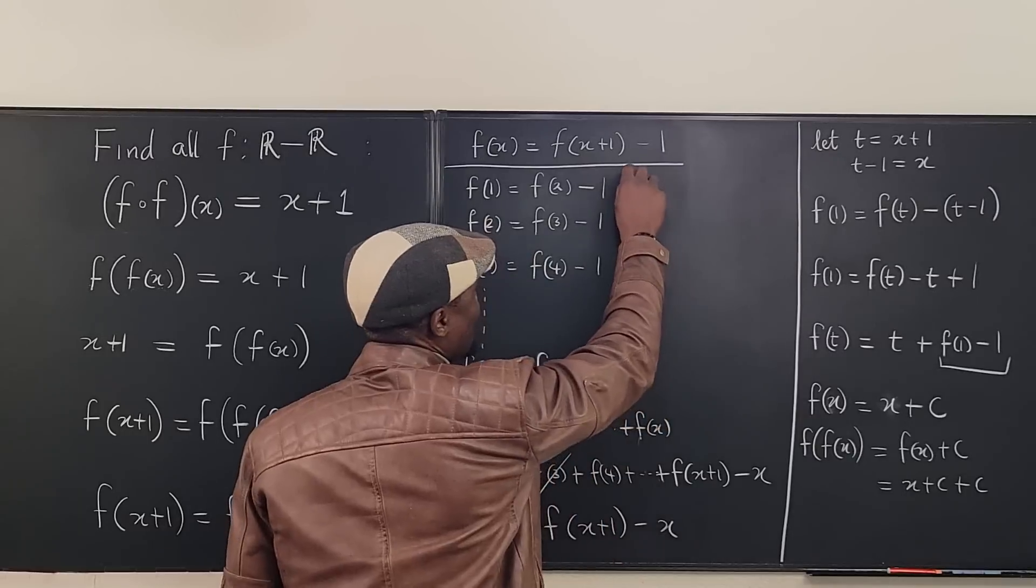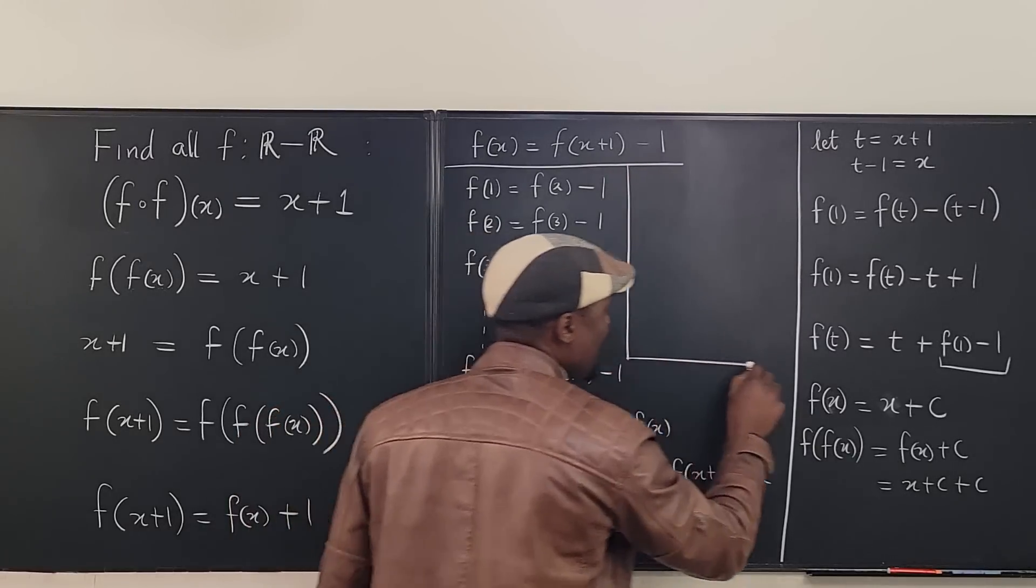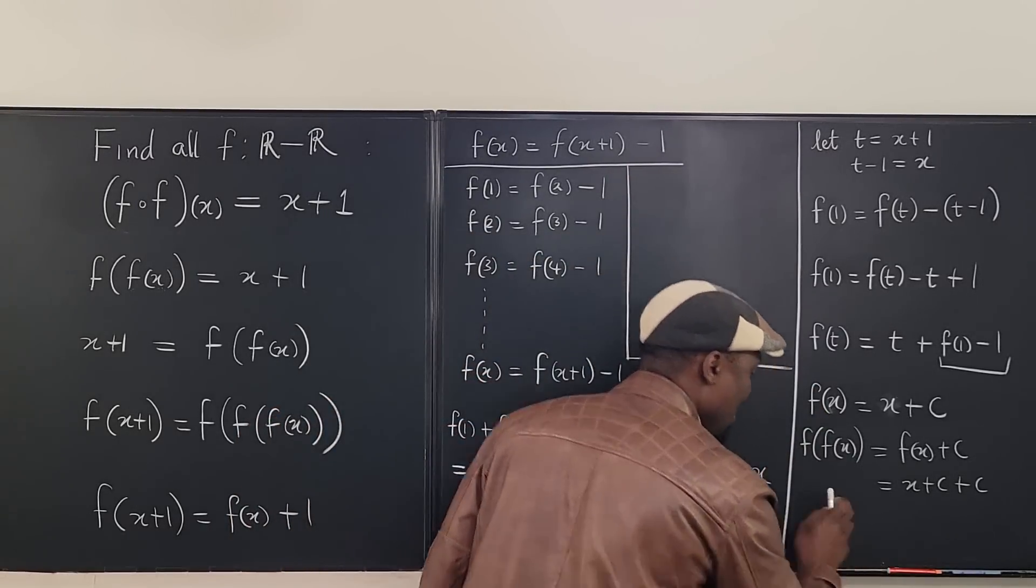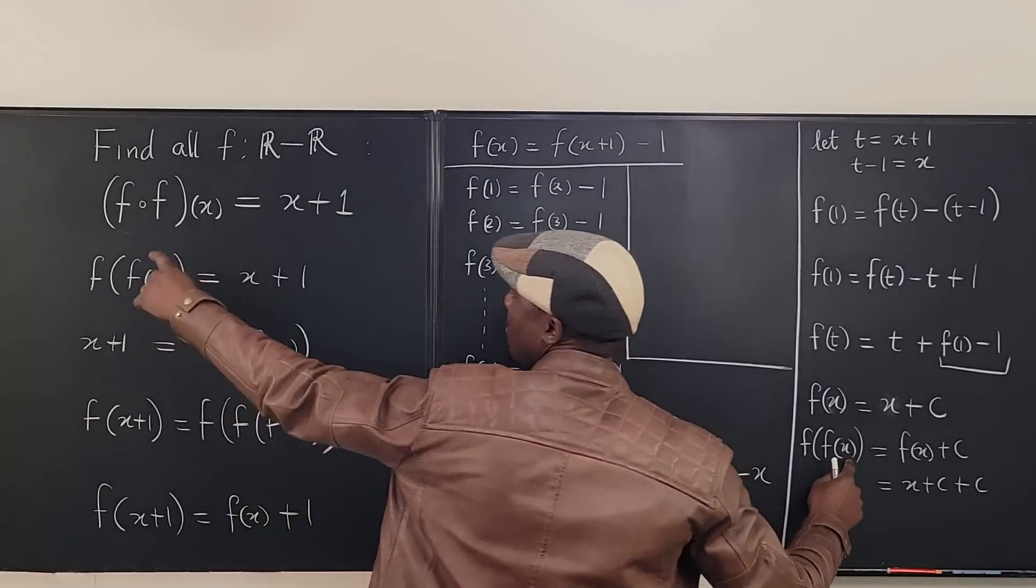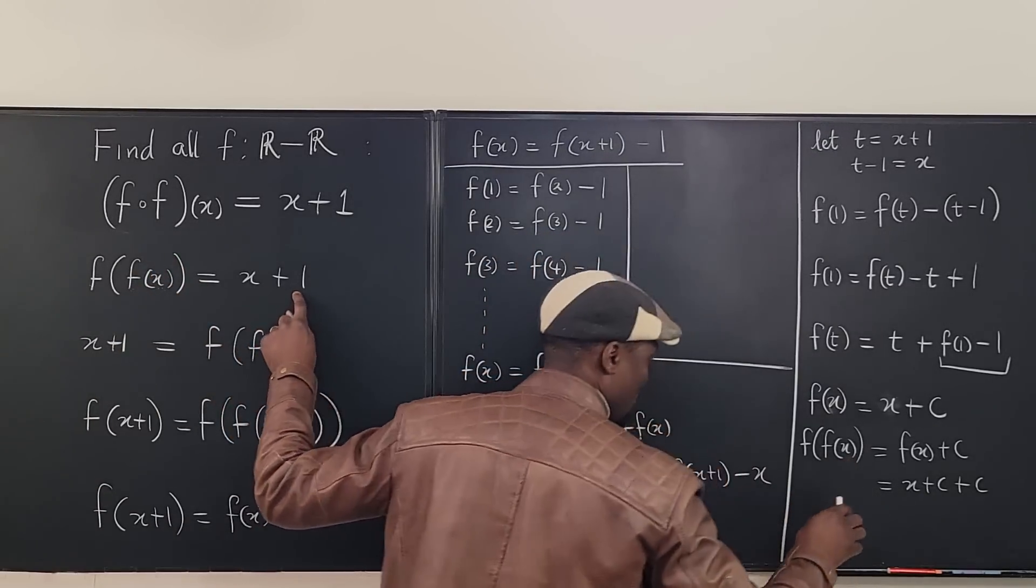So we've got, actually, let's use more space here. So from here I have, but f of f of x, remember, that's the thing is x plus one.